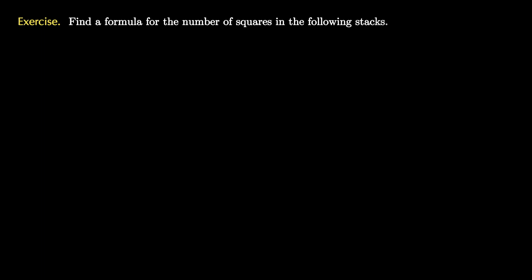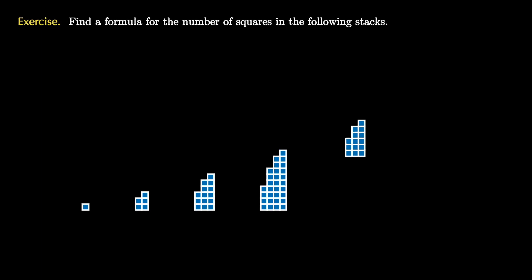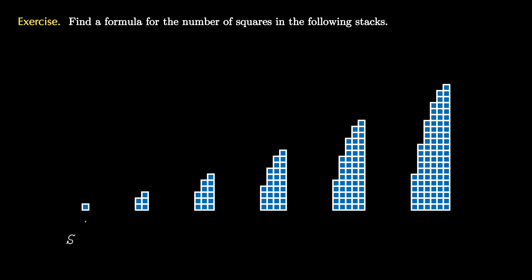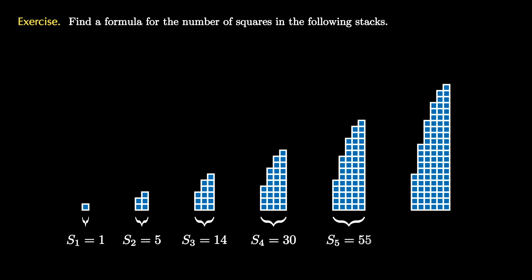Let's investigate a problem similar to one we've seen before. We want to find a formula for the number of small squares in stacks that look like buildings. Like before, we can simply count the squares by hand, seeing that there are 1, 5, 14, 30, 55, and 91 squares in the pictured stacks.